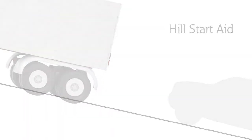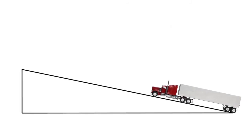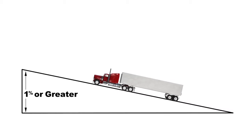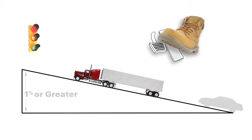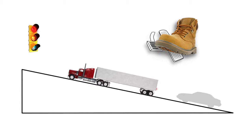Hill Start Aid is automatically enabled when your vehicle is facing uphill on an incline greater than 1% and is in a forward gear. Bring the vehicle to a stop by pressing the service brakes and then releasing them.